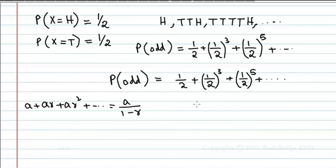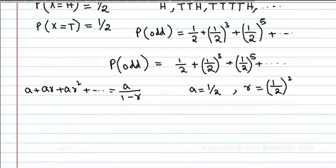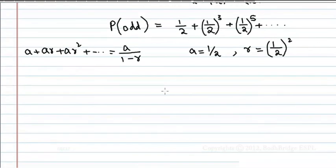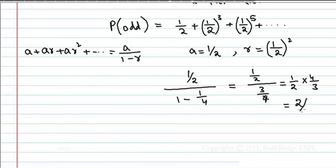Here, a is 1/2, and r is (1/2)². Therefore, the answer is (1/2)/(1 - 1/4) = (1/2)/(3/4) = 2/3.